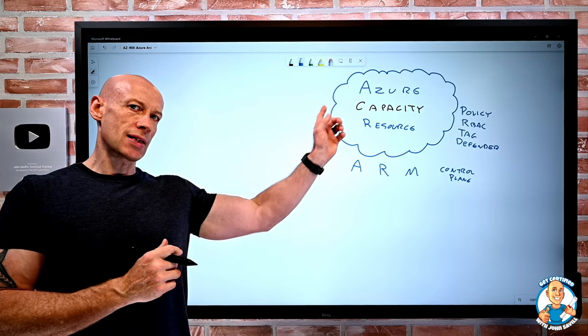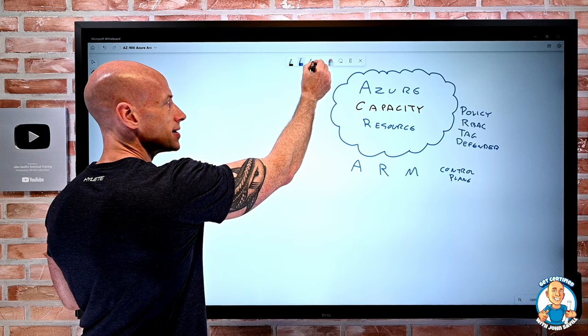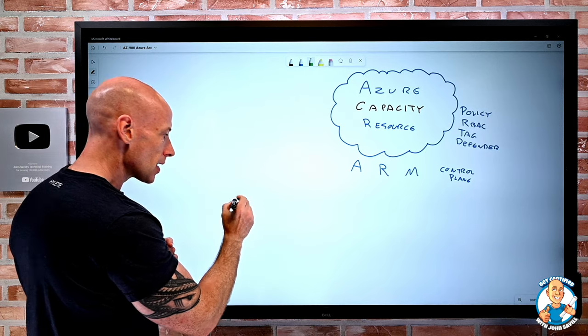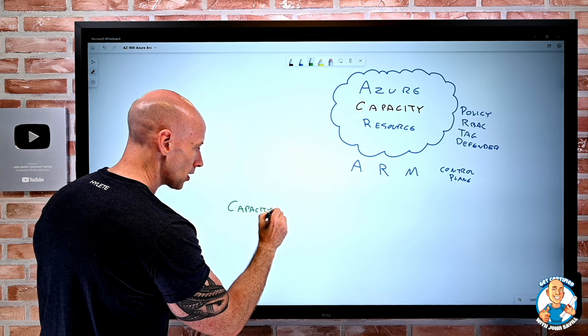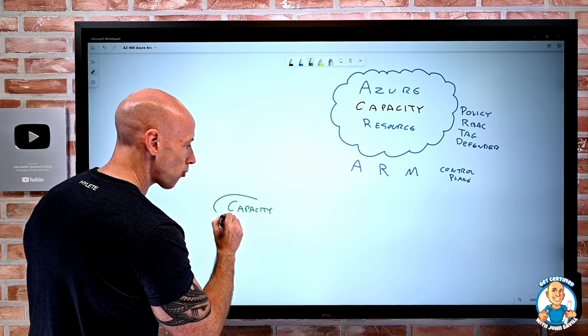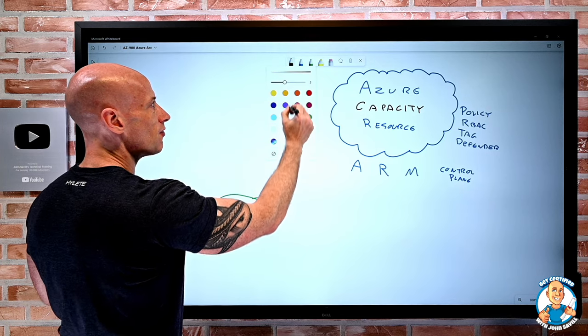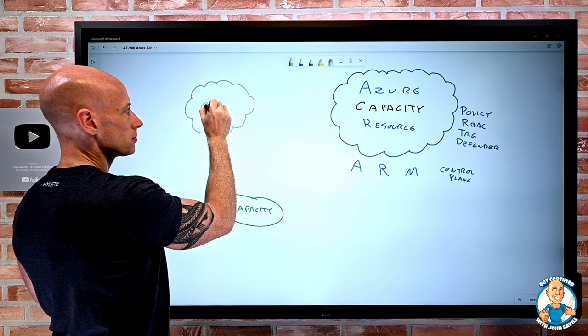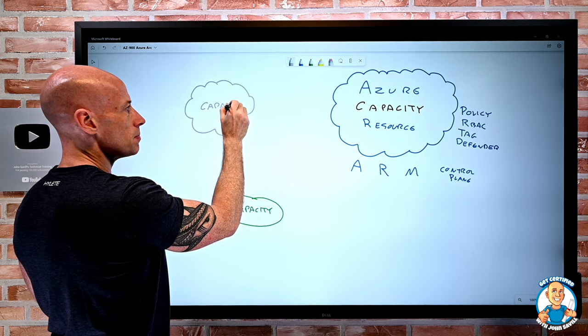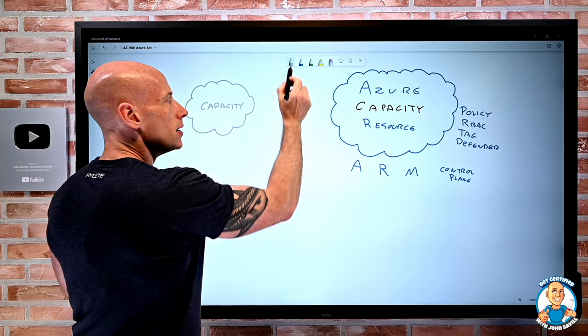Now, when we talk about Azure as this capacity exposes resources, realize I may have capacity in other places. I may have capacity on-premises through my own private clouds. I may have capacity in some other cloud. AWS, GCP, whatever that could be, I may have that capacity.